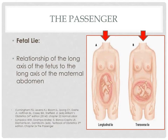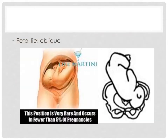The next terminology is fetal lie — the relationship of the long axis of the fetus to the long axis of the maternal abdomen. In a longitudinal lie, the fetal axis is along the long axis of the maternal abdomen. In a transverse lie, the fetal axis is at right angles to the maternal axis. In an oblique lie, the fetus is slanting at around 45 degrees to the maternal axis.